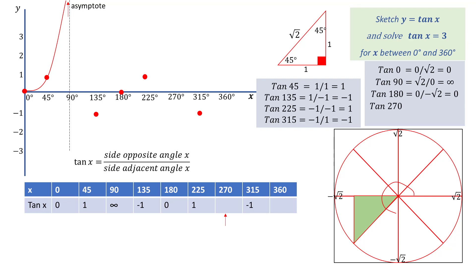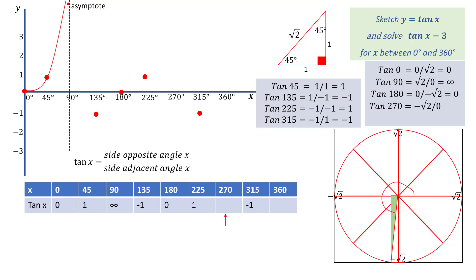Now find tan of 270 degrees. Increase the angle in the triangle so that the total angle at the centre approaches 270 degrees. As this occurs, the side opposite approaches negative root 2 and the adjacent side approaches 0, giving tan of 270 degrees equal to negative root 2 divided by 0, which is infinity. To show this on the graph, draw an asymptote — the vertical line that the graph gets closer and closer to but never reaches — not forgetting that at 90 degrees the same thing happens. So now you can draw the curve.